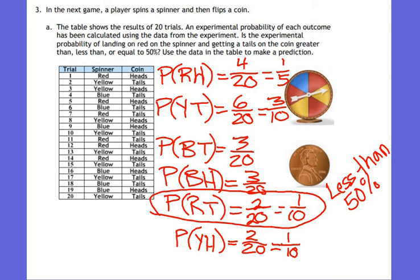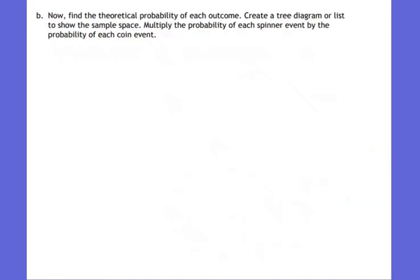This was the experimental data — experimental probability. For part B, we're going to look at the theoretical probability. To help us, let's create a tree diagram. What was the first event in our compound event? We had a spinner and a coin. The spinner went first — it was listed first. So I'm going to look at the spins.